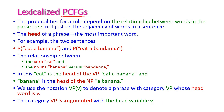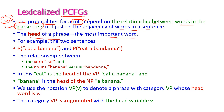Lexicalized PCFGs — that is probabilistic context-free grammar. Here the probabilistic rules depend on the relationship between the words in the parse tree, but not the adjacent words in the sentence. The head of the parse tree is very important — that is, the most important word.